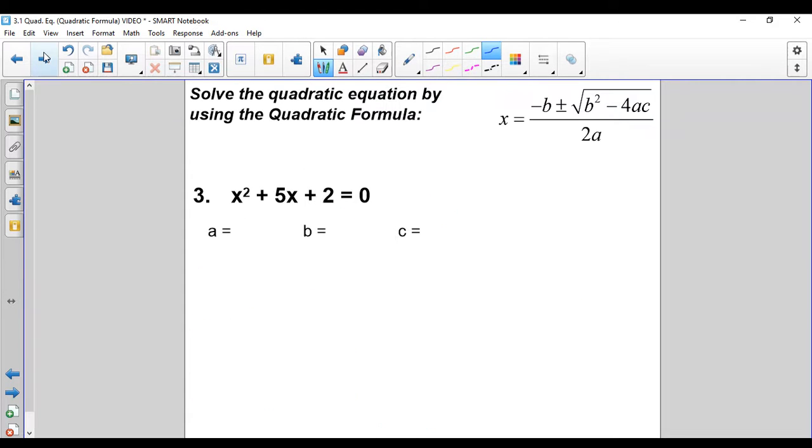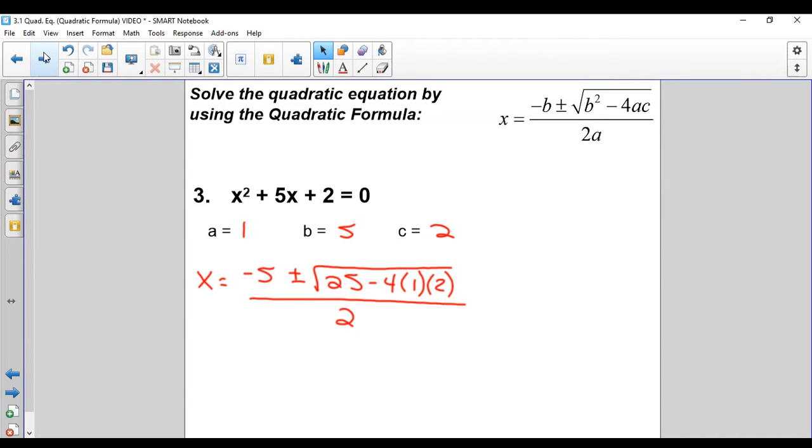Third one. Just more new variations of it, just getting all the looks at our answers. We get a is 1, b is 5, c is 2. Plug everything in. Opposite of b is negative 5 this time, plus or minus b squared, which is 25, minus 4 times 1 times 2, all over 2 again. It's not always going to be over 2. We're going to see some on the next couple slides that it's not over 2.